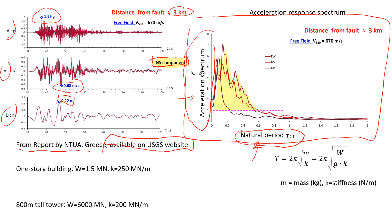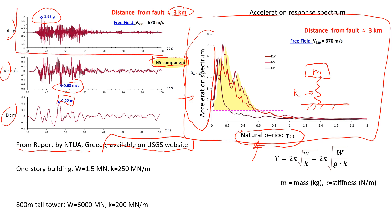The way we get this spectrum is by assuming a single-degree-of-freedom linear model. We select a mass m connected to a spring with stiffness k. We also need to assume a damping ratio — for earthquake engineering this is typically 5%. We then select an earthquake acceleration record, in this case the Turkey earthquake, and excite this model with that acceleration record.